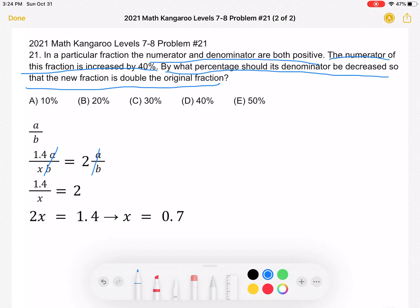So if we're multiplying the denominator by 0.7, that means that we're decreasing the fraction by 30% because 1 minus 30% is equal to 0.7. So we decreased it by 30%, which is answer choice C.